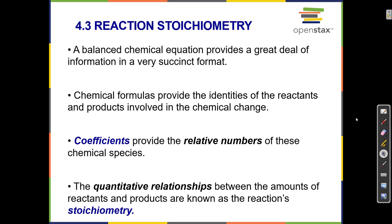Stoichiometry is the relationship of the amounts of the ingredients — the ratio of each reactant and each product. When we balance an equation we make sure that we add coefficients in front of the ingredients and products. For example: two eggs plus one cup of flour makes one cake. The numbers in front of each ingredient and product are called coefficients.